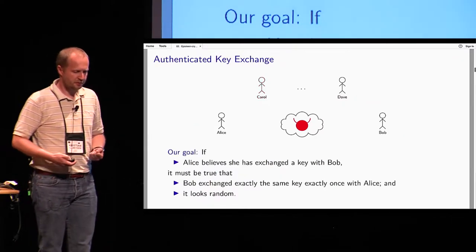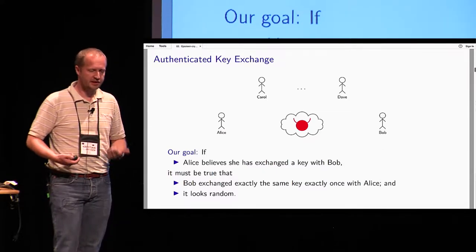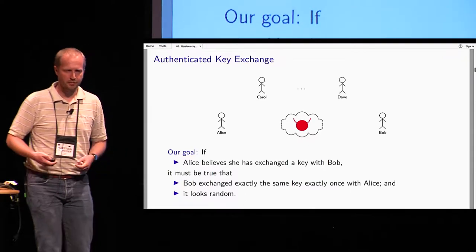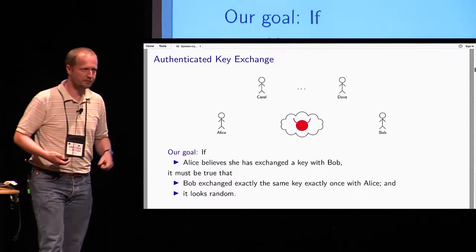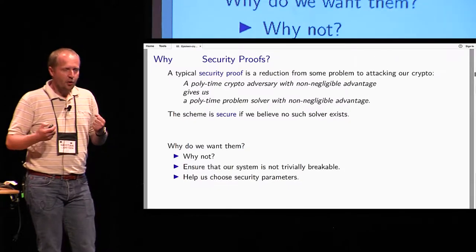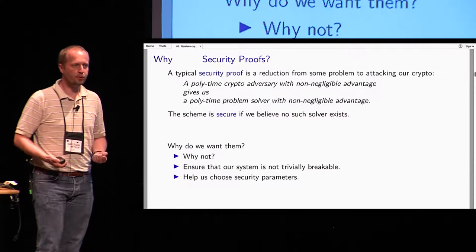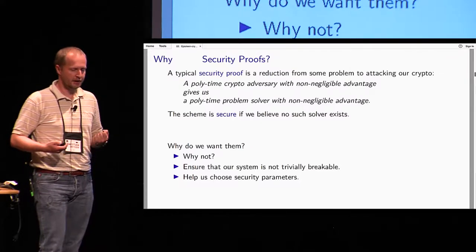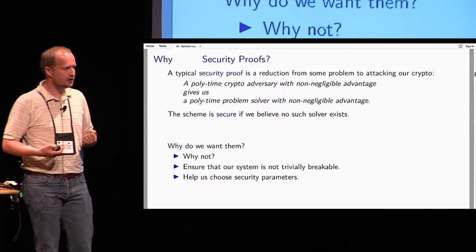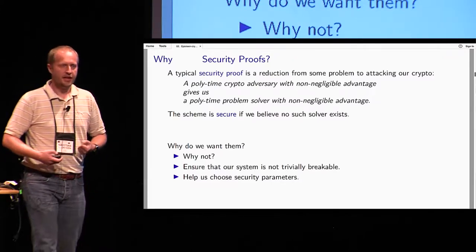Let's remind ourselves what our goal is. We want authenticated key exchange. Once we have a security notion, what we next want is a security proof — we want to prove that our scheme is secure — and this usually takes the form of a reduction.